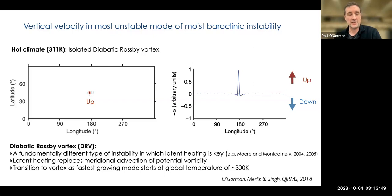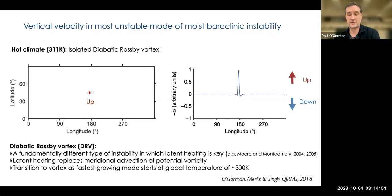We're seeing this becoming the fast-growing mode, but that doesn't mean it has to completely dominate the solution — that's not what we see when we run the idealized GCM in warm climates. But it does mean we should expect it to be a much more important feature of the extratropical weather systems.